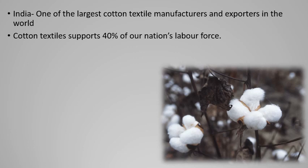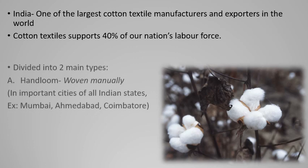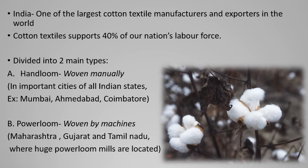India is one of the largest cotton textile manufacturers and exporters in the world. Cotton textile supports 40% of India's labor force — so of every 100 laborers, 40 are directly related to the cotton industry. The industry is divided into two types: handloom, where cloth is woven manually and is famous in cities like Ahmedabad, Mumbai, and Coimbatore; and power loom, woven by large machines.